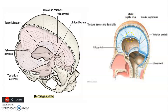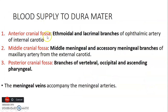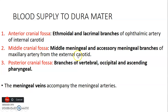Regarding the blood supply of dura mater, divide the skull into three cranial fossae. In the anterior cranial fossa, the dura is supplied by branches of the ophthalmic artery — which comes from the internal carotid artery — specifically the ethmoidal and lacrimal branches. In the middle cranial fossa, the dura is supplied by branches of the maxillary artery from the external carotid artery, including the middle meningeal artery and accessory meningeal arteries.